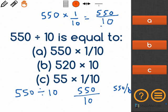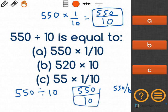As you can see, this here matches the answer down here, therefore 550 times 1 tenth, A, is the correct answer.